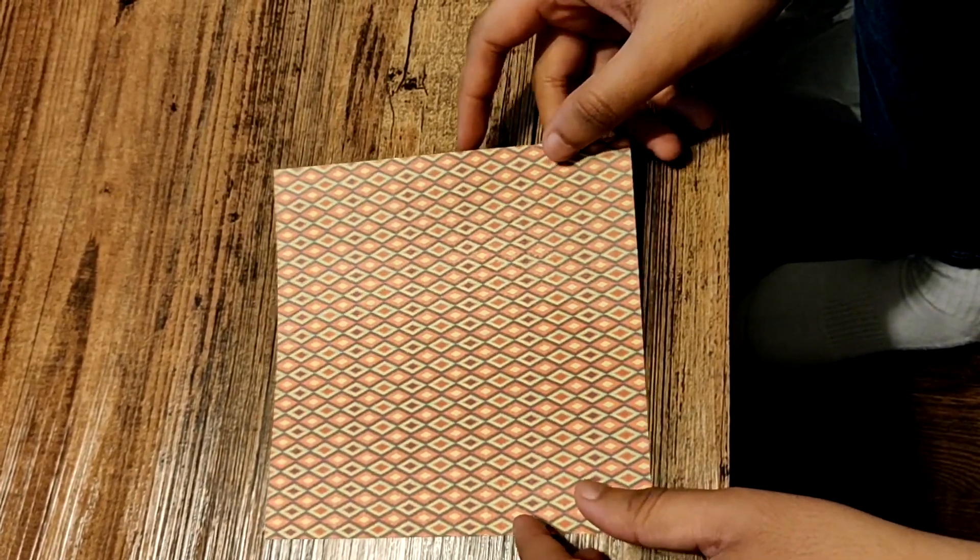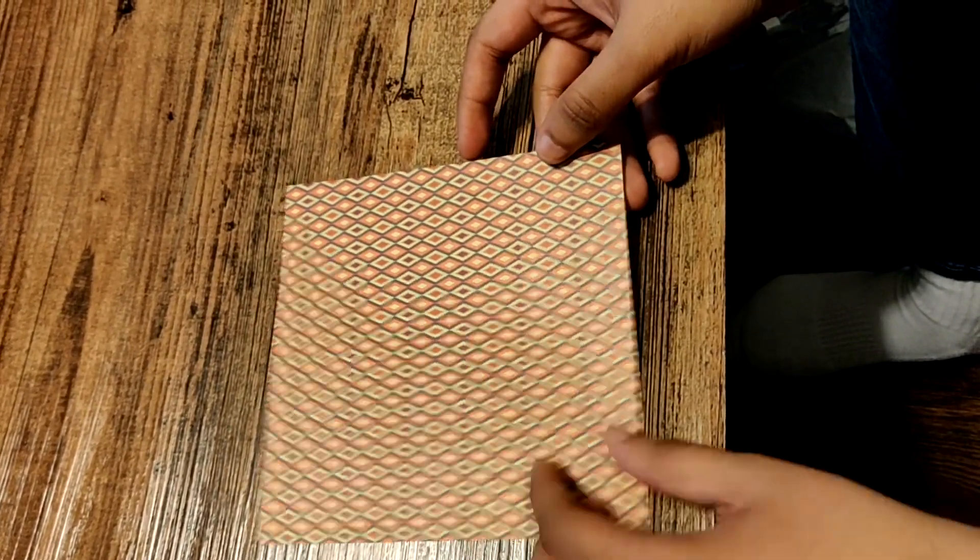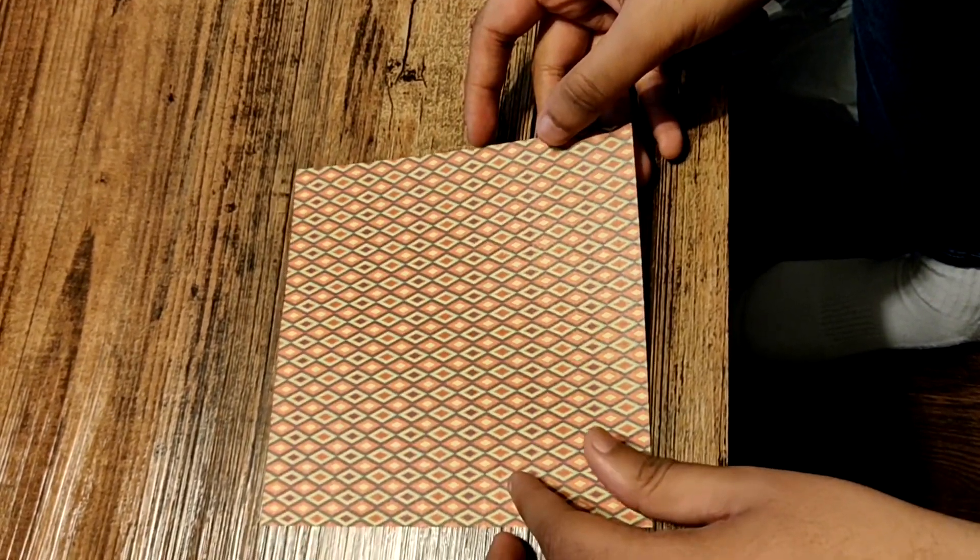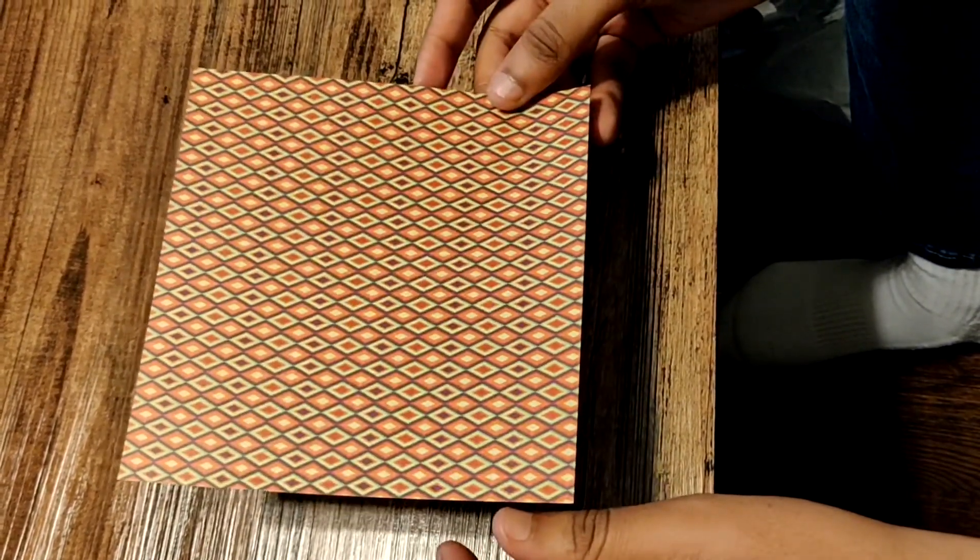Once again, if you don't have a square piece of paper, then you can just take a normal piece of paper and cut it to make it a square. Alright, so we're going to start with this.